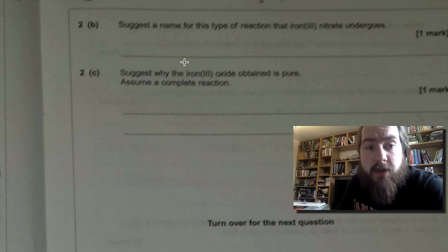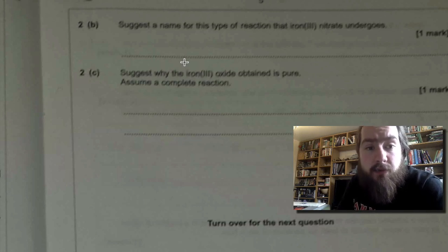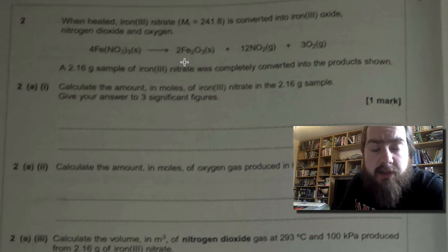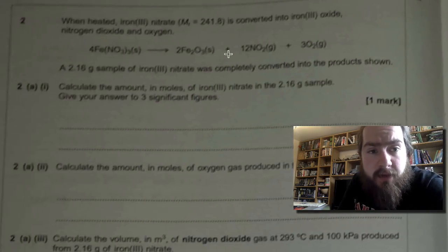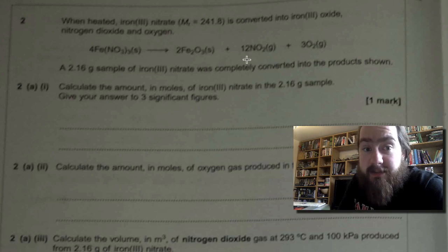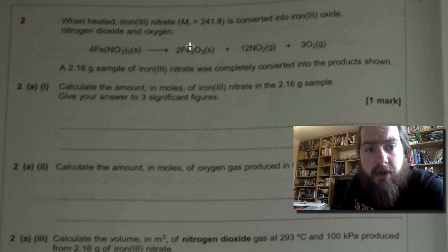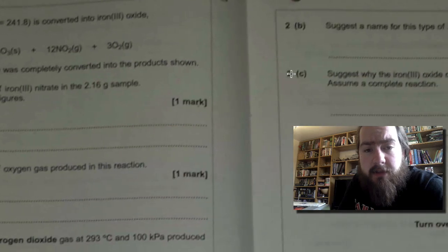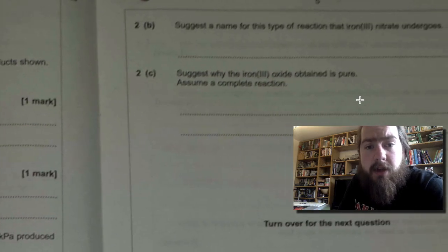2 part C. Suggest why iron(III) oxide obtained is pure, assuming a complete reaction. Now I had to have a think about this one because it's not as obvious as some of the other parts of the question. But I think what they want you to say is that the other two products are gases. So they're asking you to recognize that these two are gases, so they wouldn't be in the products. You just end up with solid iron oxide because it's completely converted. So I would say that the other two products are gases.